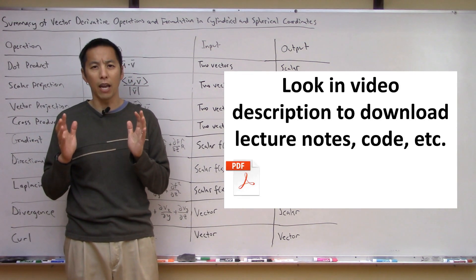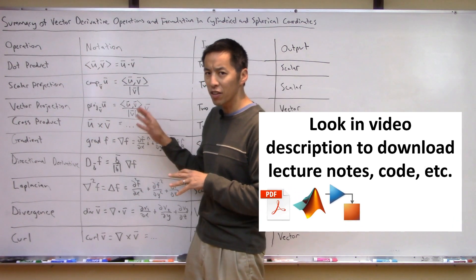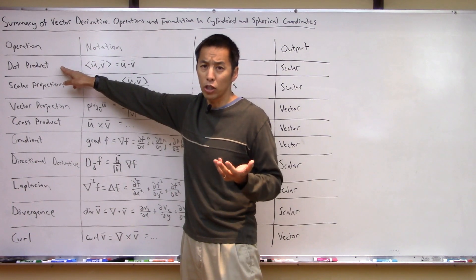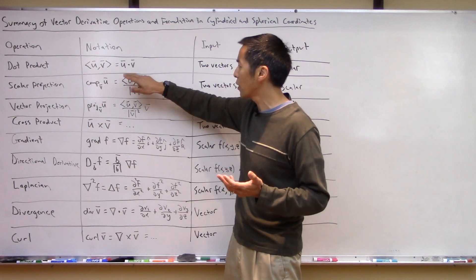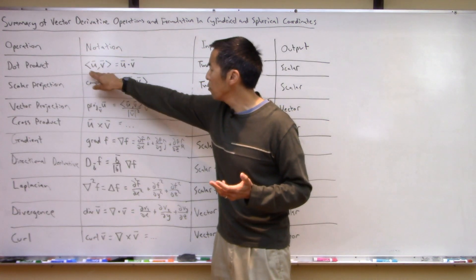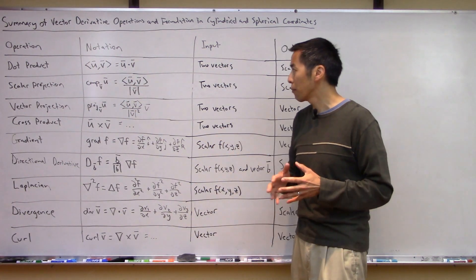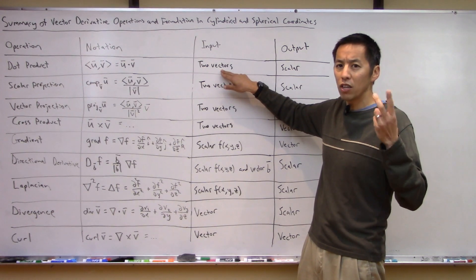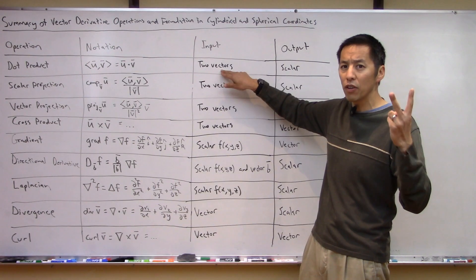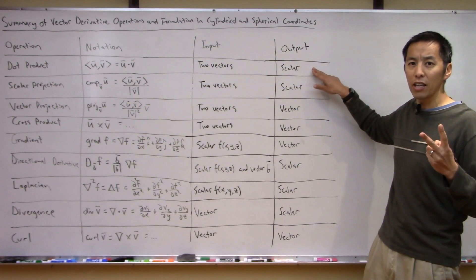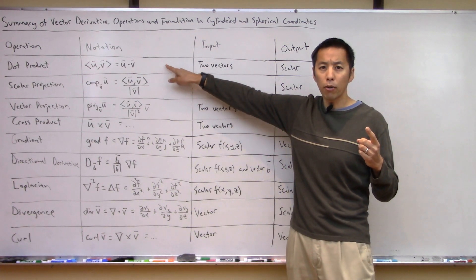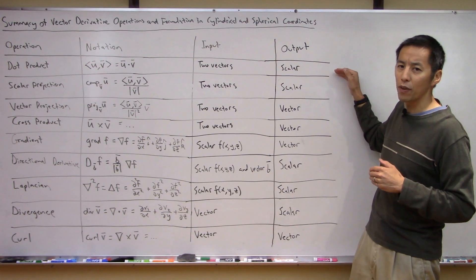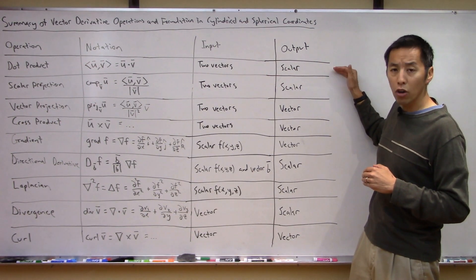If you scroll down to the description of this video there's a link to a page where you can download all the lecture notes and see all the notation, so if something isn't clear on the board you'll be able to get that in the lecture notes PDF. So let's start with the dot product — it's typically denoted as a vector with a dot and another vector, or sometimes using the inner product notation with angle brackets.